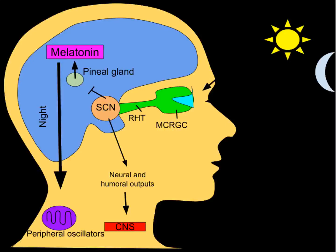The stimulus comes to the eye. In the eye, we have the ganglion cells, which are photosensitive. They give the information to the SCN. The SCN gives the information to the pineal gland, and the pineal gland produces the hormone melatonin, which is maximum during night and falls during the day.